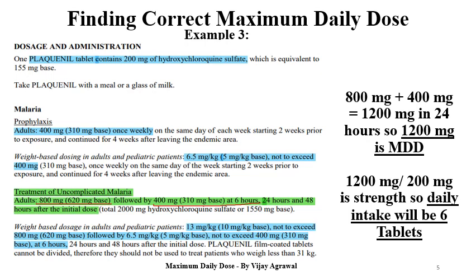But the MDD is the maximum daily dose — the dose given in 24 hours. So let us see again: adults 800 mg followed by 400 mg at 6 hours. The latter dose at 24 hours is not to be taken into consideration. Only 800 mg plus 400 mg will become 1200 mg as the maximum daily dose. The maximum dose that can be administered in a single day is 1200 mg. So: 800 mg plus 400 mg gives 1200 mg in 24 hours. Tablet strength is 200 mg, so 1200 mg divided by 200 mg becomes 6 tablets per day.